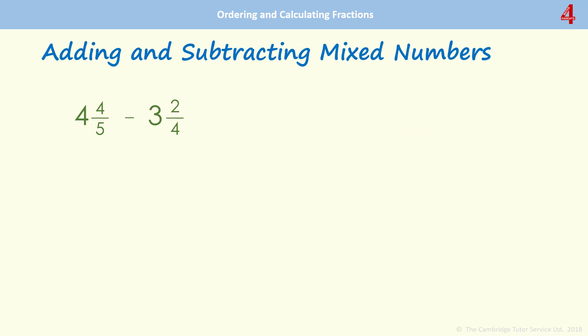And finally, subtracting with mixed numbers. The same process to start with. We need to convert the mixed numbers to improper fractions. How many fifths and how many quarters? Looking at the fifths, 4 times 5 is 20, add 4, that's 24.